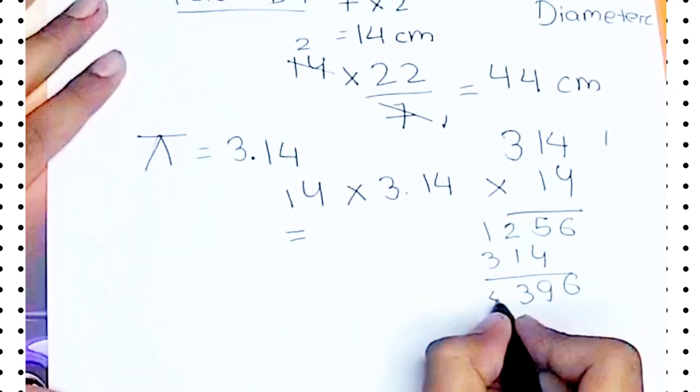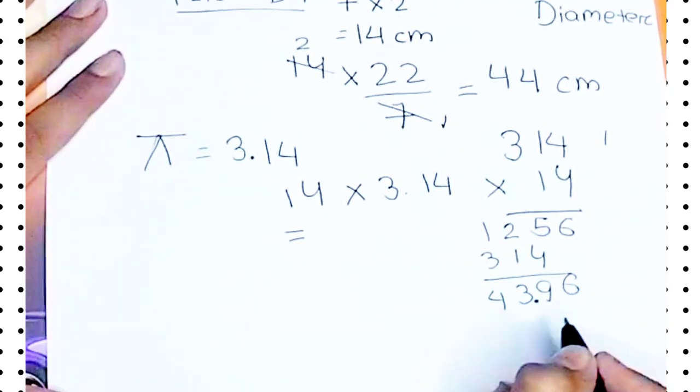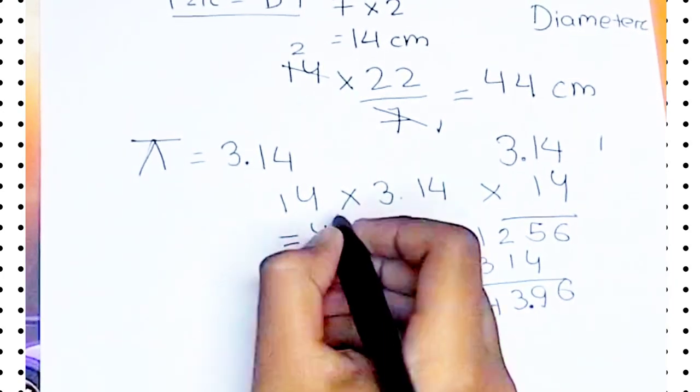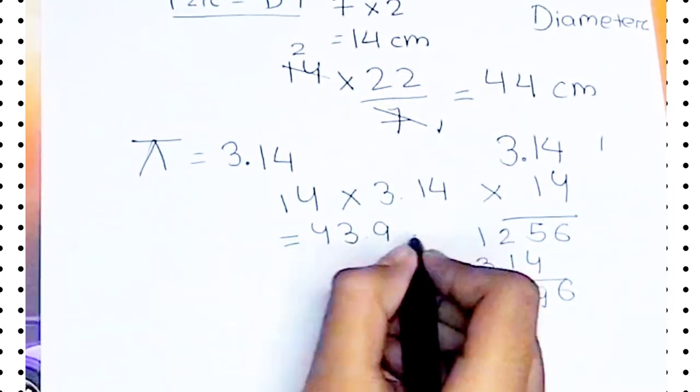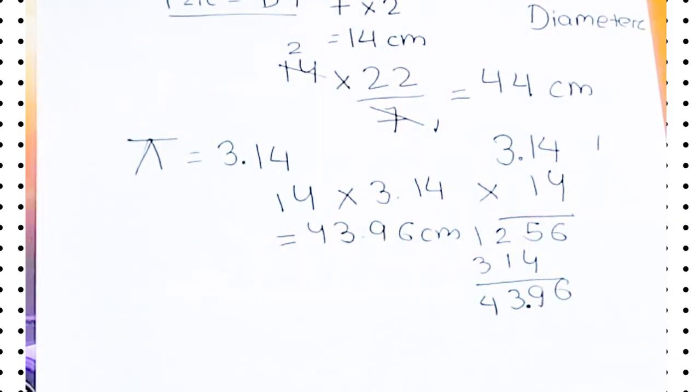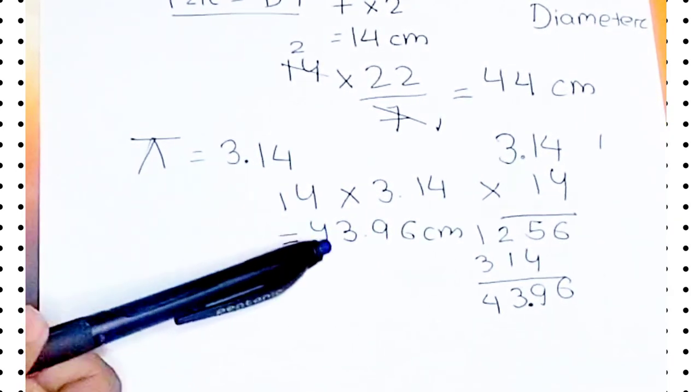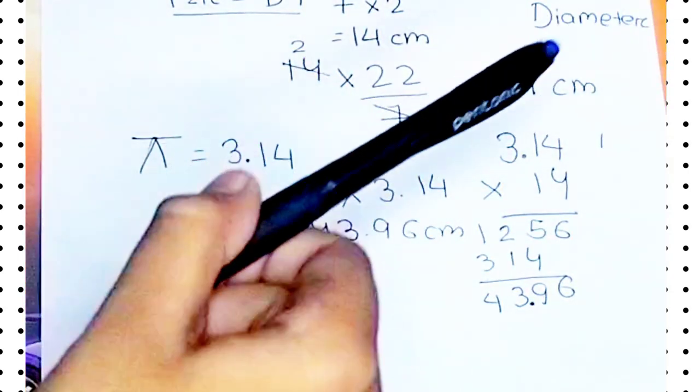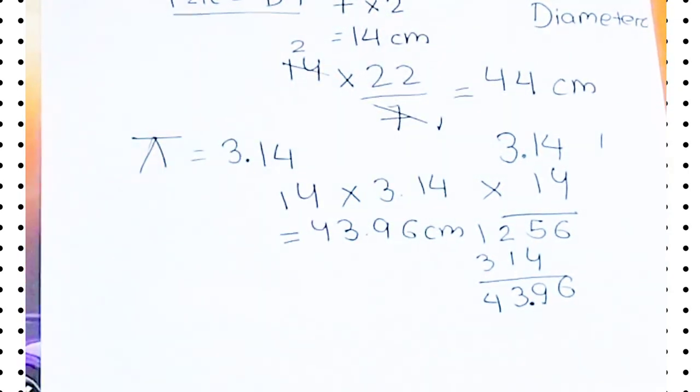Our answer is 43.96 centimeters. Now you see we have got more. If you round off this number we will get 44 centimeters only, but here you have got a more exact answer. Now let's take the more accurate value of pi.